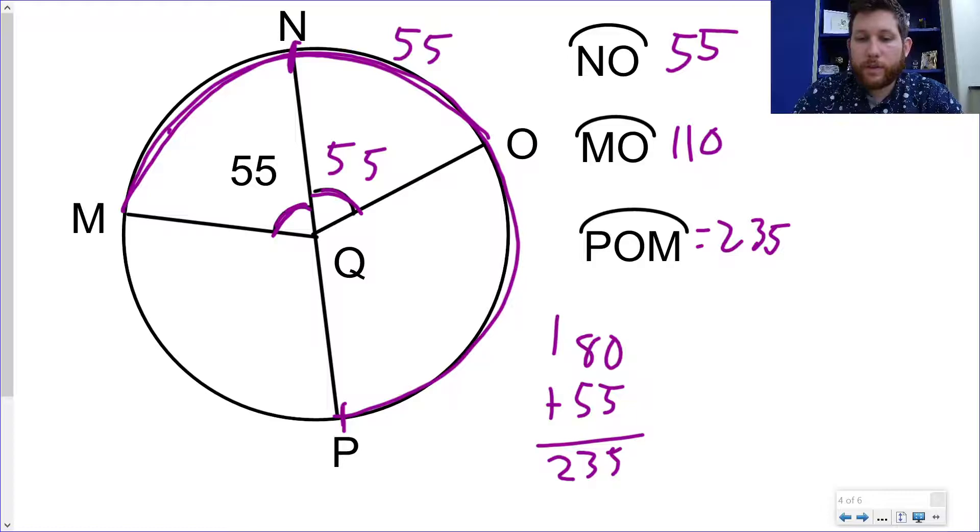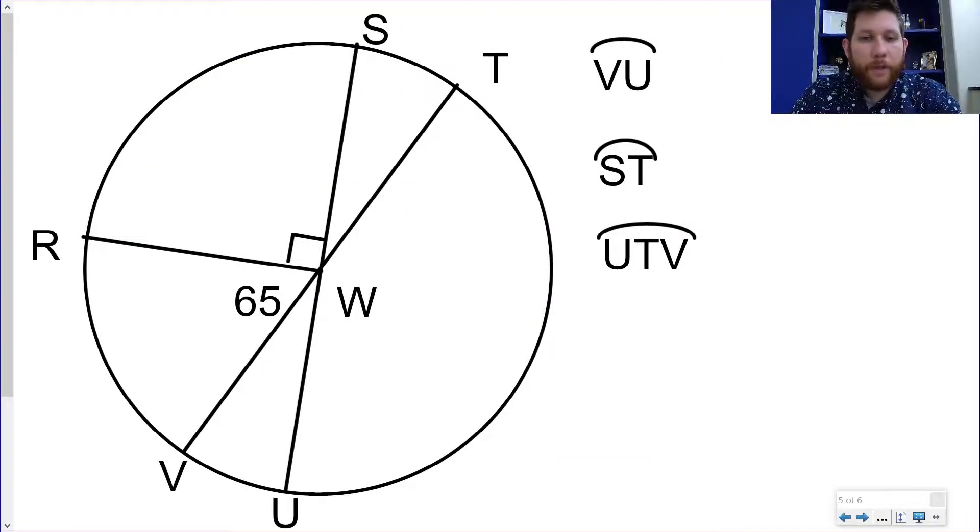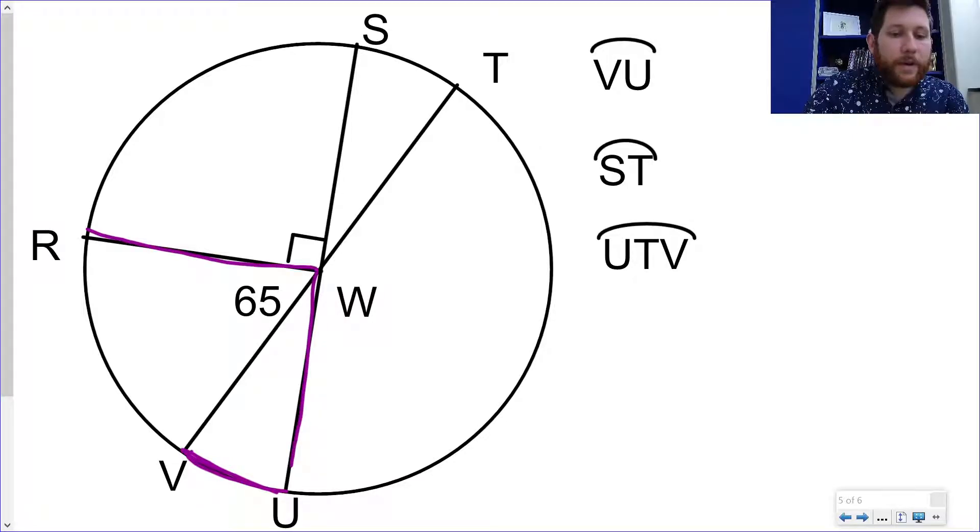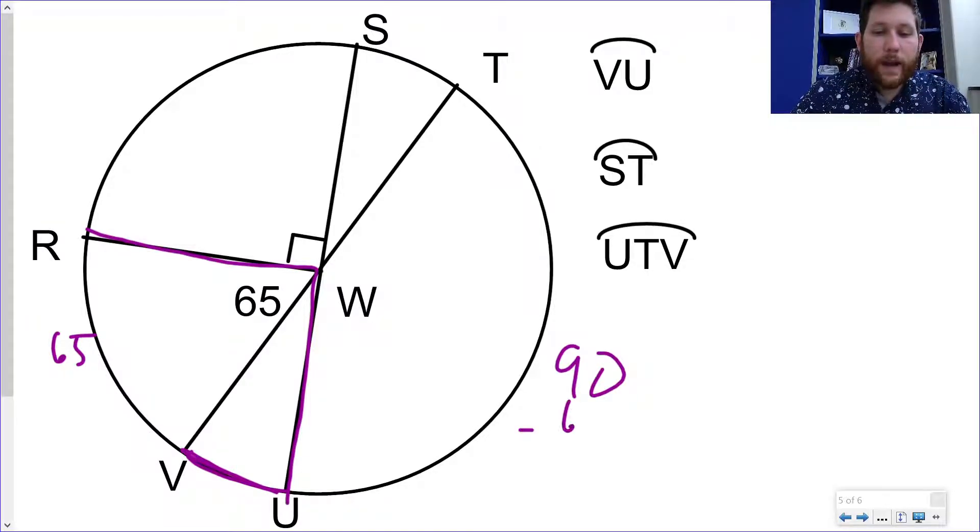So there's one or two things I want to show you here that you might run into. This first one, VU, we want to solve for VU. So what I would think about, again, you want to think about whole circles, half circles, and quarter circles a lot of times. Notice that VU makes up 90 degrees with this RV section. And I know RV is 65. So what I'm going to do to do VU is I'm going to say, okay, 90 minus 65.